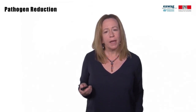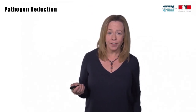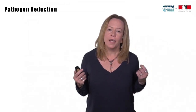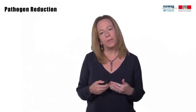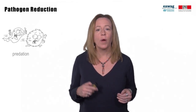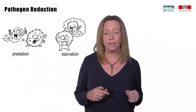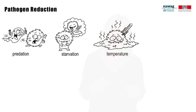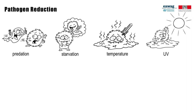Biology is also very important in managing pathogens, as these disease-causing organisms are also biological. The main mechanisms of inactivation include predation from other organisms, starvation as pathogens run out of food, temperature — for example, in treatment processes like composting, thermophilic anaerobic digestion, or lime treatment — and UV in cases where light rays can penetrate, such as the surface of waste stabilization ponds, but not in tanks where solids at the surface block significant transmission of rays.